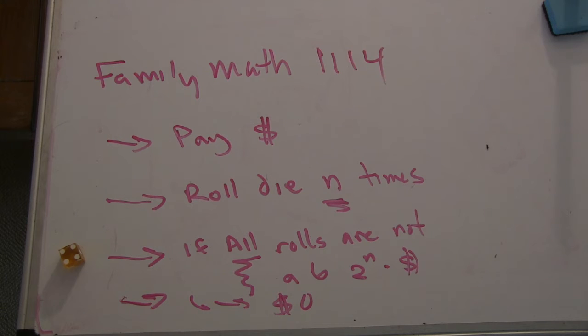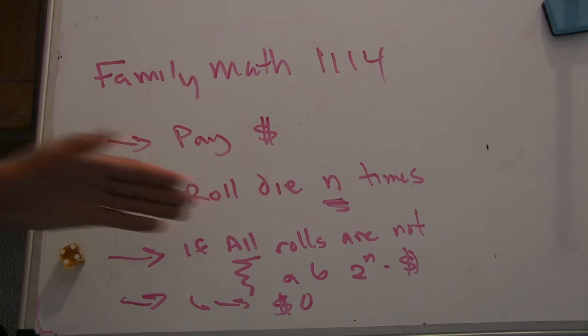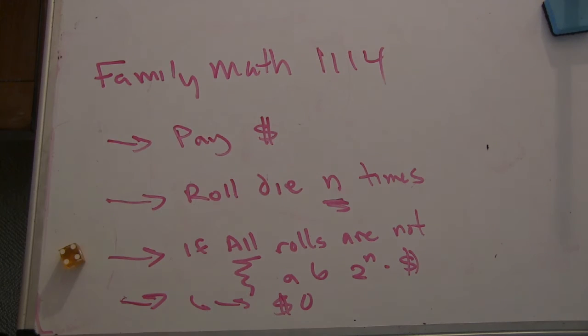Well, I'm guessing that a strategy would probably be to have a high risk strategy of betting a lot of money and rolling a few times. Or maybe you could go low risk and pay a small amount of money but roll a lot of times and try to make it back with the amount of rolls that you have.